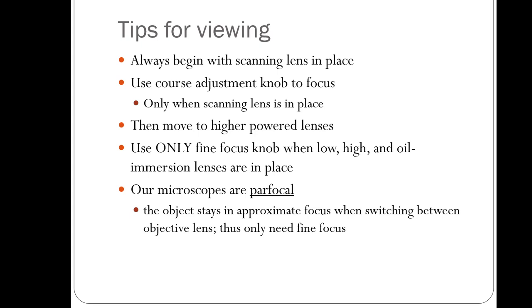When viewing through a microscope, always start with the scanning lens in place. With the scanning objective lens, you can use the coarse adjustment knob for big changes in the stage. Once you get it in focus with the scanning lens and move to the low power lens to zoom in more, you should no longer use the coarse adjustment knob — only use the fine focus knob with the low power, high power, or oil immersion lenses.